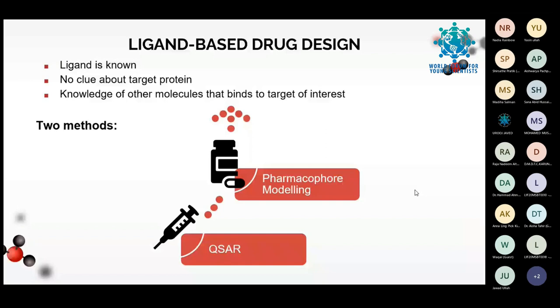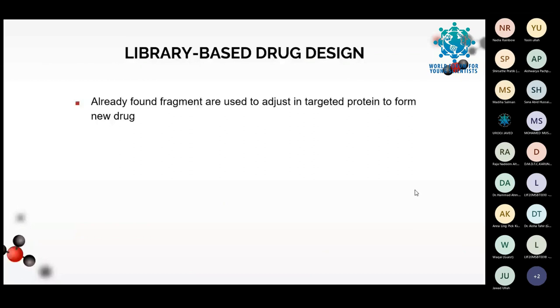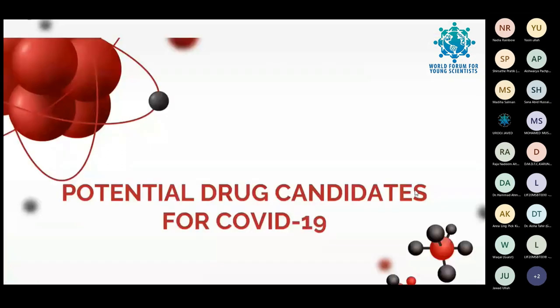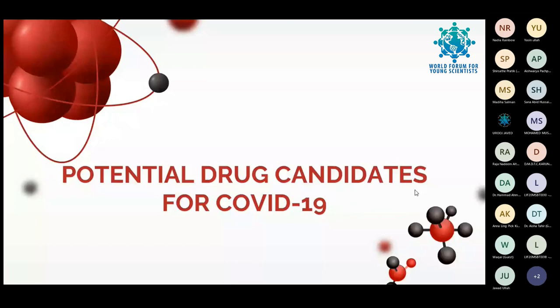In library-based drug design, if we have a protein target, we use drugs already available in our library. If that drug interacts with the target protein, we can make a new drug. Fragments of different chemicals from our database that interact with the target protein can also be used. Here, we don't need a known ligand or a novel ligand molecule. We have now covered the basics: what is a drug, how to make a drug candidate, the steps and processes of drug designing, and the types of drug designing.